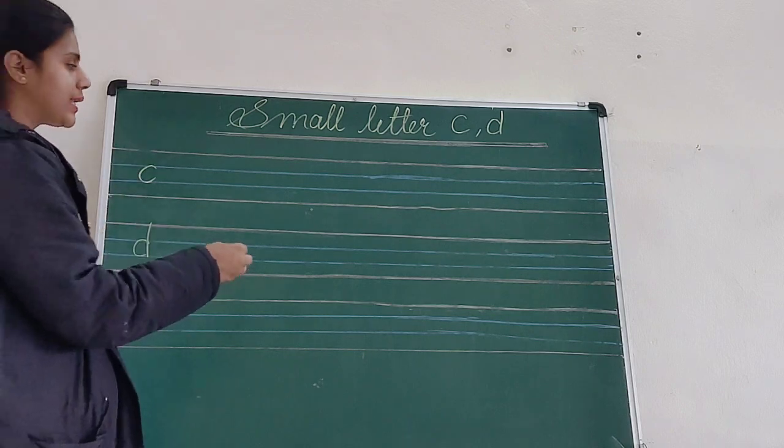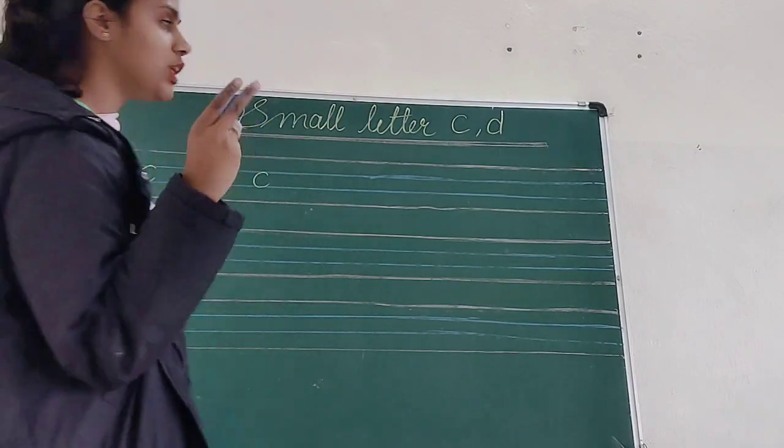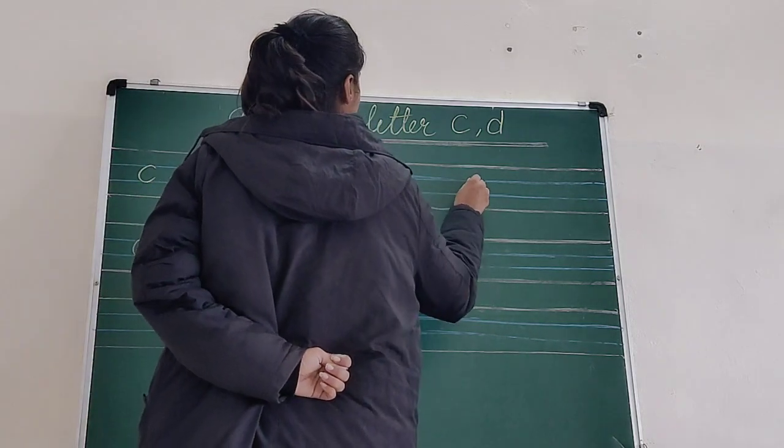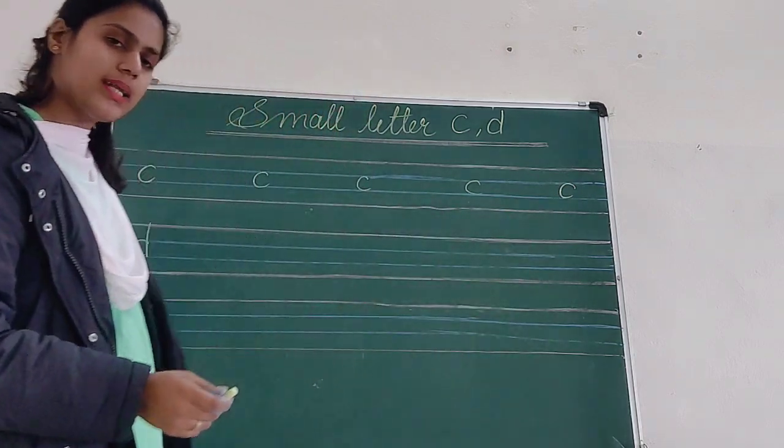So, first we are going to write C for cat. Make a small curve between two lines. This is how we have to write C for cat. Okay students? Now,